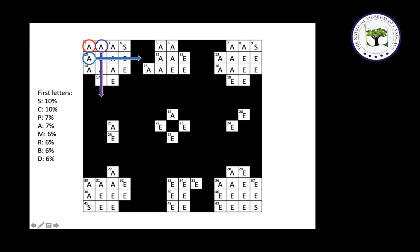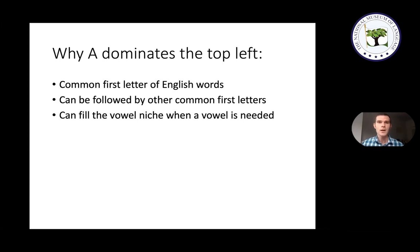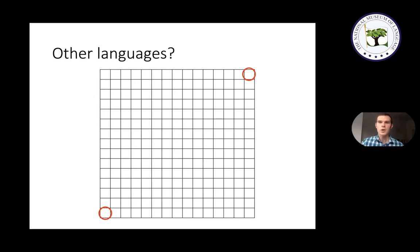I don't just want to talk about English in this talk, so I want to say a few words about other languages and the types of wordplay that can show up in them. To start, I'll focus on two particular positions in the crossword grid: the top right corner and the lower left corner. Whichever letter goes in these positions needs to be the first letter of one answer but the last letter of a different answer. So in order for these squares to be easy to fill in, you'll want your language to have letters that commonly serve as both first and last letters of words.